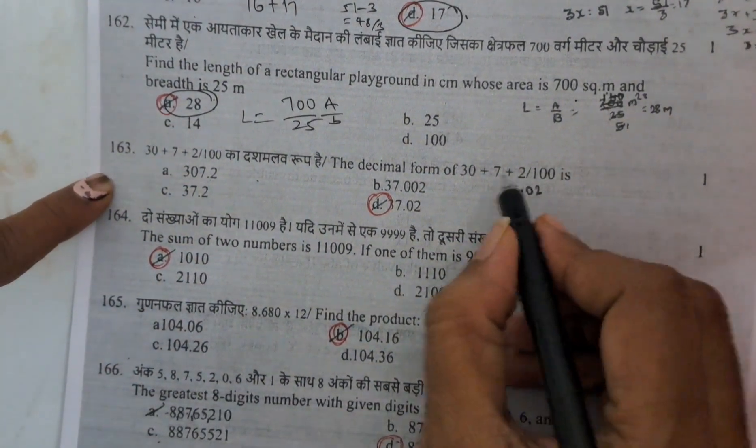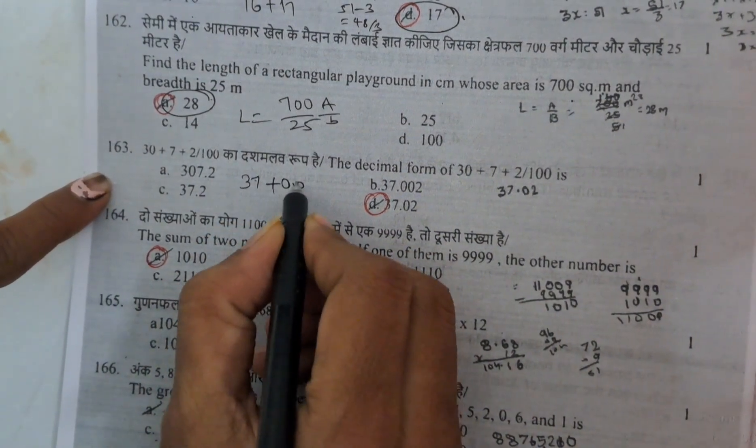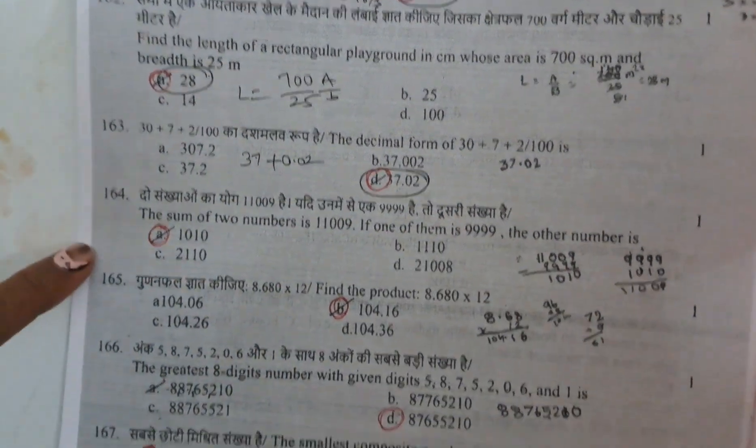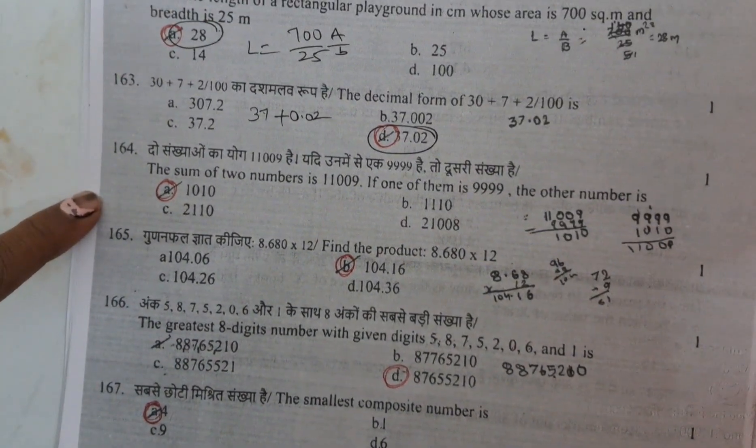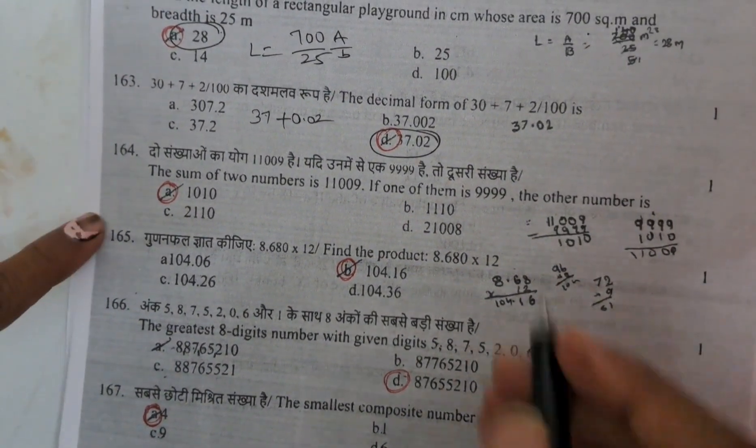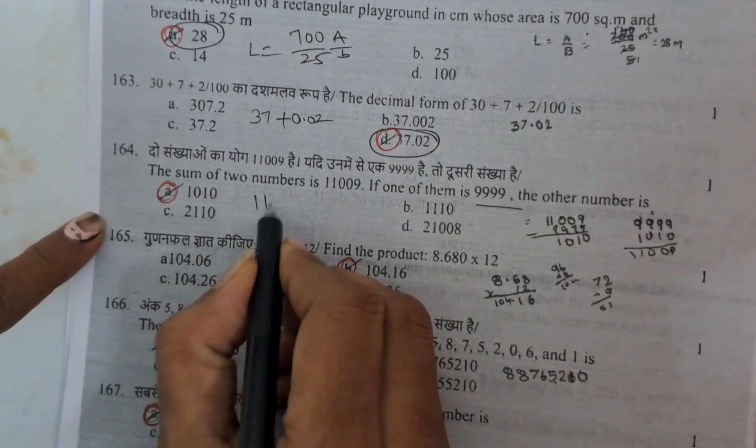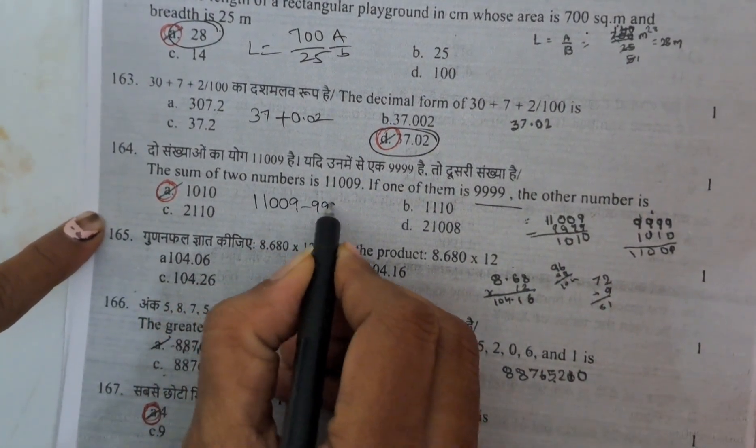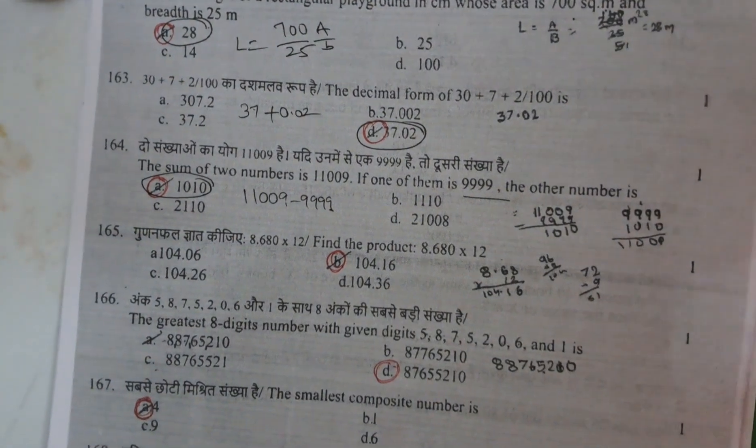In 163, this is decimal form. 30 plus 7.37 plus 0.02. The answer is D. And next sum of 2 numbers 111109. If one is 99999, the other one is, if you do the subtraction, total minus then you will get the answer 101010.